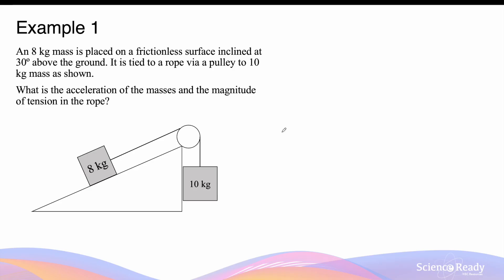Hello everybody! This video is on masses on a pulley on an inclined surface. Let's look at this example here. We have an 8kg mass placed on a frictionless surface inclined at a 30 degree angle above the ground. This angle here is 30 degrees. It is tied to a rope by a pulley to a 10kg mass as shown. We want to find the acceleration of the masses and also the magnitude of tension in the rope.